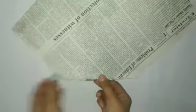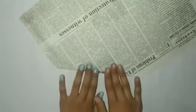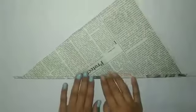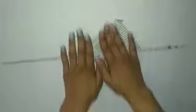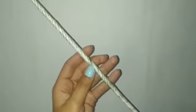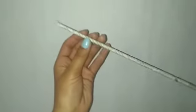Start making it as a thin straw. When you are done, secure it by applying glue like this. Make 10 straws like this.